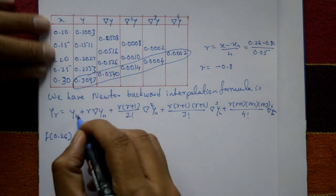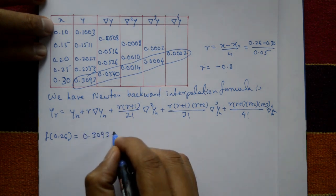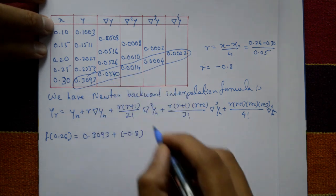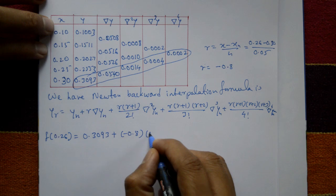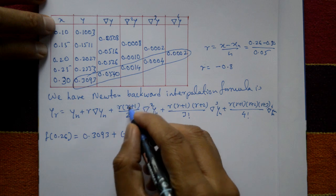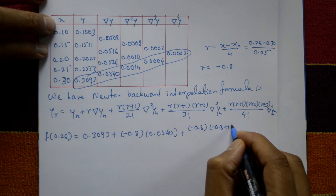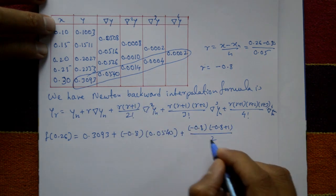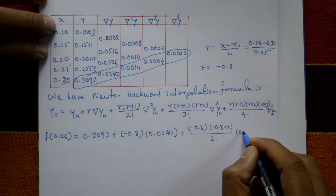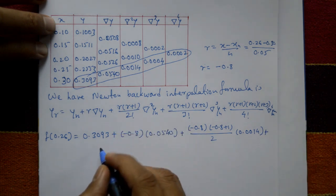Substituting into the formula: f(0.26) = 0.3093 + (−0.8)(0.0540) + [(−0.8)(−0.8+1)/2] × 0.0014. The second term uses r = −0.8 and the second backward difference 0.0014.